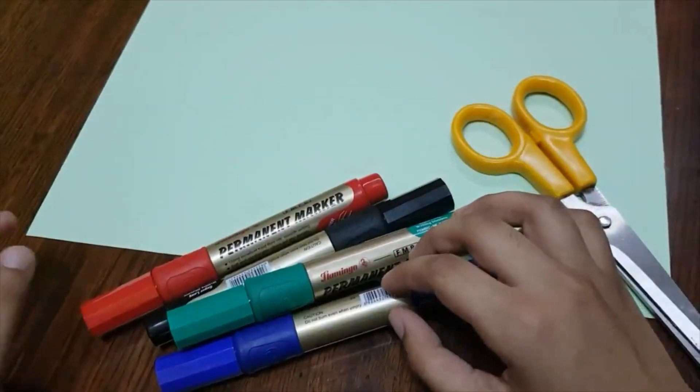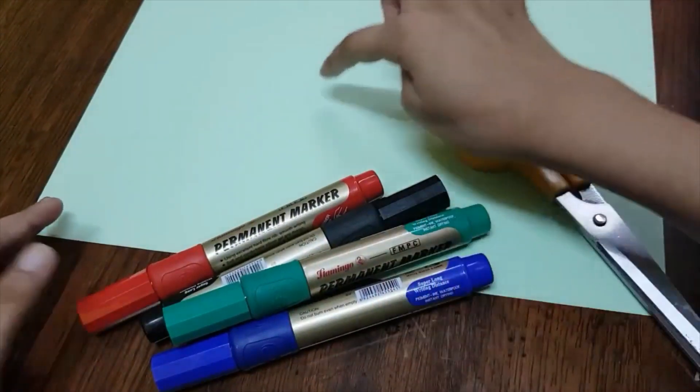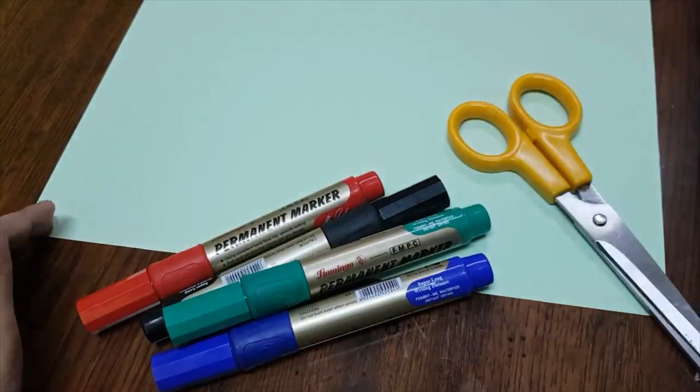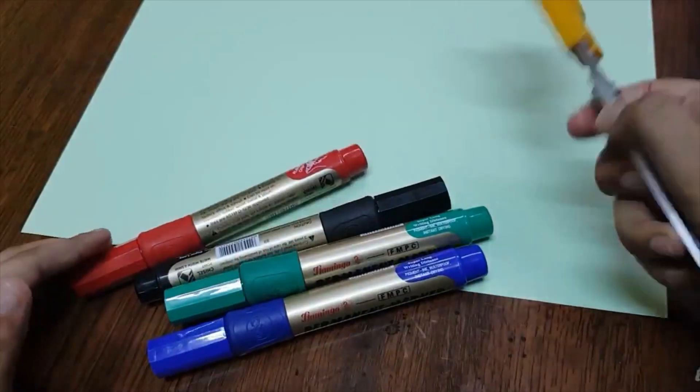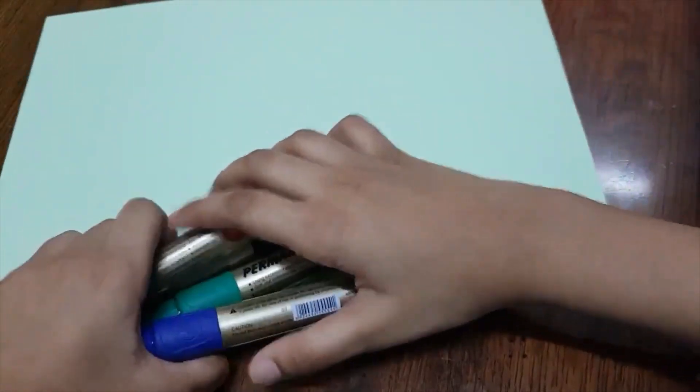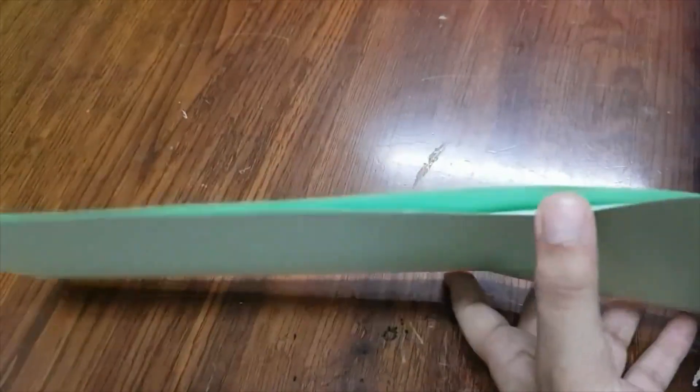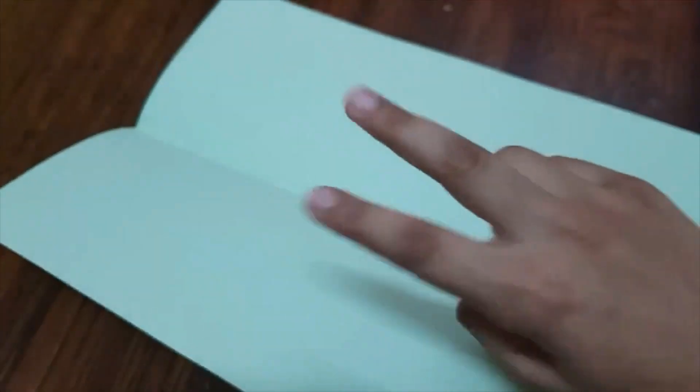So the next craft we are going to be doing will need some chart paper, preferably green or yellow color, some markers, and a scissor. Now the first thing you need to do is to fold this paper into half, so let's do that. So now I have folded this paper into half. The next thing you need to do is cut it so that you can get two pieces.